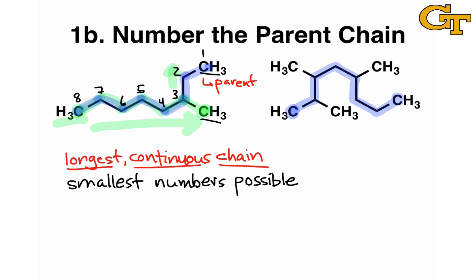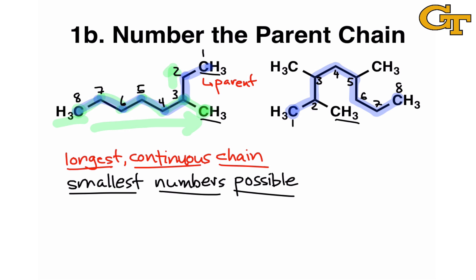We have an even more complicated situation on the right-hand side with multiple substituents. The idea is still smallest numbers possible — we start numbering at the end of the chain closest to a substituent. The left-hand end is closer to a methyl substituent: you only walk one carbon to find a methyl from the left, versus three carbons from the right. So we start numbering from the left and move right. The black numbering scheme gives the smallest numbers to all substituents, not just the first methyl group.